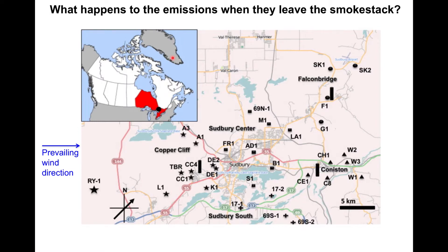In the Sudbury area, there are several smelters. The prevailing wind direction is from the west to the east. So as emissions are released at the top of each smelter, the wind blows all that material from west to east on average over the course of the year.